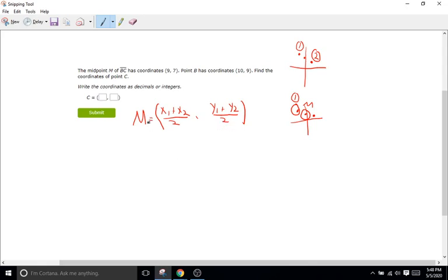So we'll start by plugging things in. The midpoint, it says, is 9, comma, 7. So I'm just going to write down 9, comma, 7 right there, equals. And then we'll plug in our first coordinate right here, X1, comma, Y1. X1, comma, Y1. And so X1 is going to be 10 plus, we don't know our X2 yet. That's what we were trying to find for the answer. So I'm just going to write X2 over 2, comma, Y1 is going to be 9 plus Y2. We don't know that. We need to figure that out. So plus Y2 all over 2.